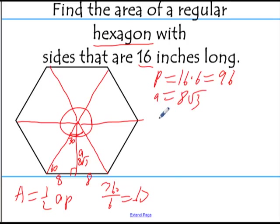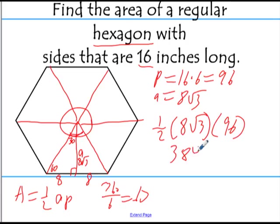And so, our formula is 1 half times the apothem times the perimeter. So, half of 8 is 4. 4 times 96 is 384. So, that's 384 times the square root of 3. And of course, our units is square inches.